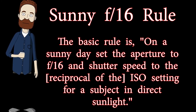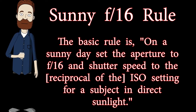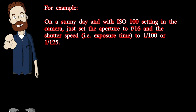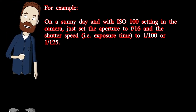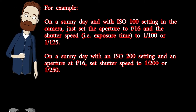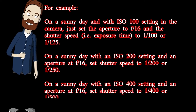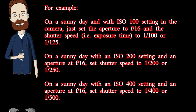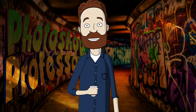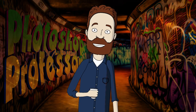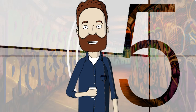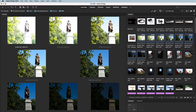The basic sunny 16 rule: on a sunny day, set the aperture to f/16 and the shutter speed to the reciprocal of the ISO setting for subjects in direct sunlight. For example, with ISO 100 set the aperture to f/16 and shutter speed to 1/100th or 1/125th. With ISO 200 and f/16, set shutter speed to 1/200th or 1/250th. With ISO 400 and f/16, use 1/400th or 1/500th. This old rule predates light meters but can still verify your exposure since your camera will sometimes lie to you.